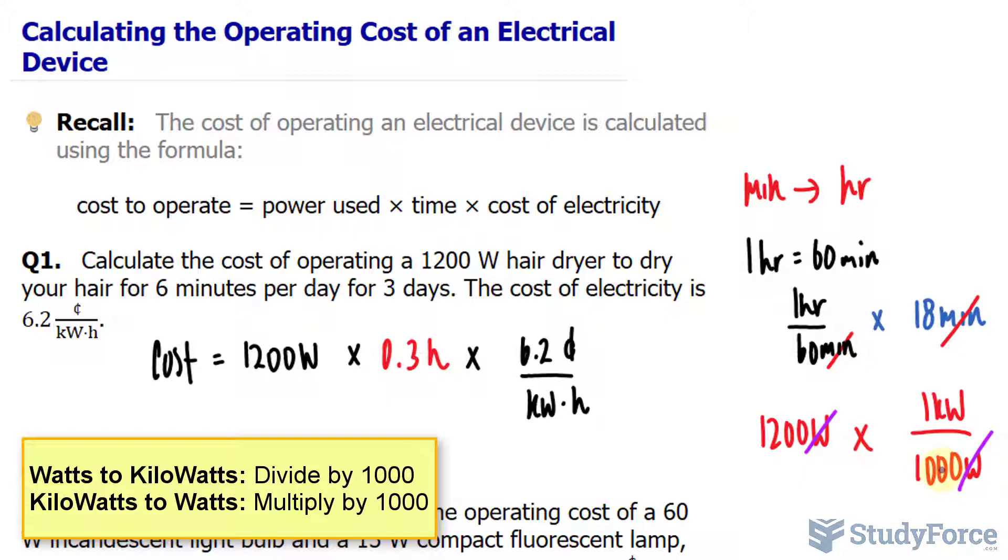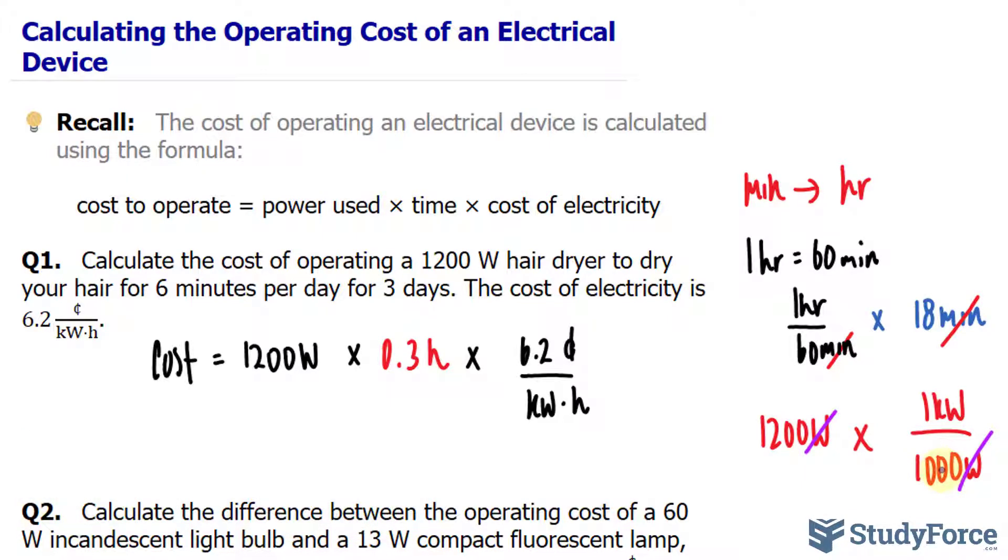Notice that the units cancel out, and instead of 1200, we can write it down as 1.2 kilowatts.